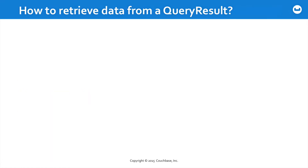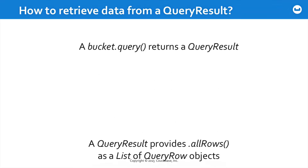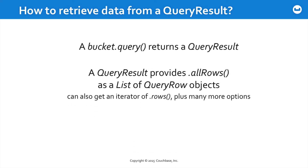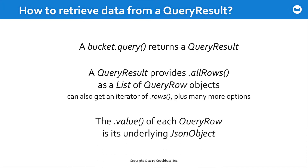So what happens when your query method returns? You get back a QueryResult object. This object has a couple of different ways to access its values. There is an allRows method that returns a list of QueryRow objects. If you prefer to work with iterators, you can use the rows method. The value method of each QueryRow returns the underlying JSON object for that particular row of the results. You would then manipulate the data as needed within your client.